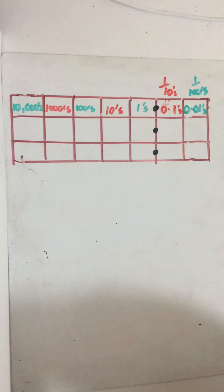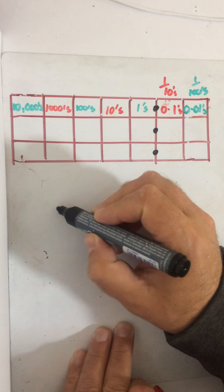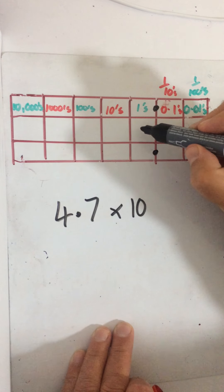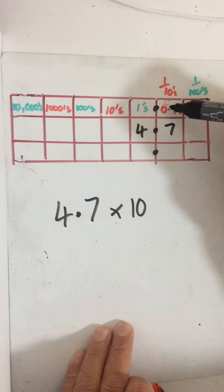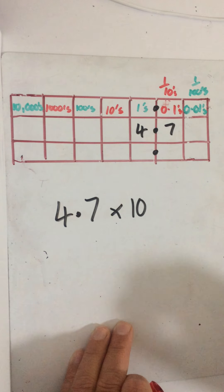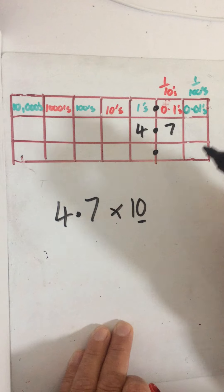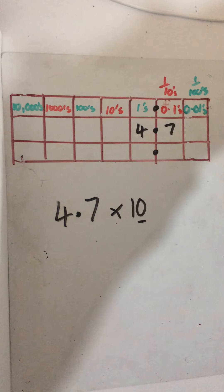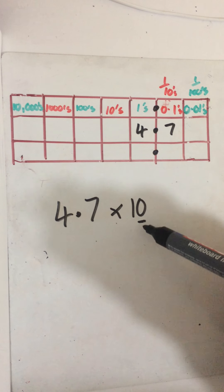So here we have — you've got this at the top of page 9. You can use this if you find it helpful; if not, it doesn't matter. Say for example we've got 4.7 times 10. I'm going to put it in the place value grid. We've got one in the fours column and one in the tenths — the 0.1s column. Then we times that by 10. When we're multiplying by 10, because there's one zero, we move the numbers one place to the left. When you're multiplying, numbers get bigger.